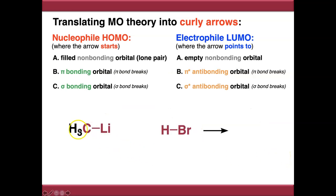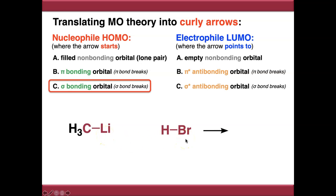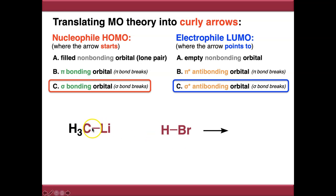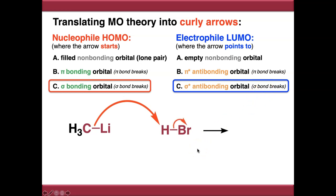Final matched example: the nucleophile has no lone pairs and no pi bonds, so we're left with sigma bonding orbitals as the HOMO. The electrophile has no non-bonding or pi star orbitals, only sigma star as the LUMO. We push the arrow from the sigma bond onto a lobe of the sigma star anti-bonding orbital, breaking that sigma bond and kicking the electrons onto the next atom along. The product reflects these changes.